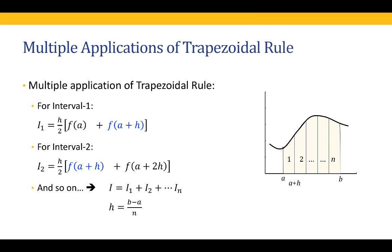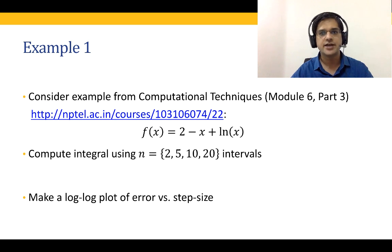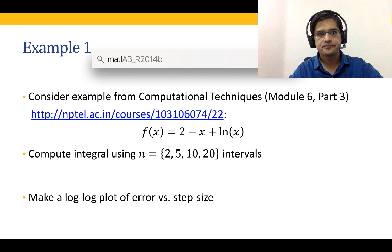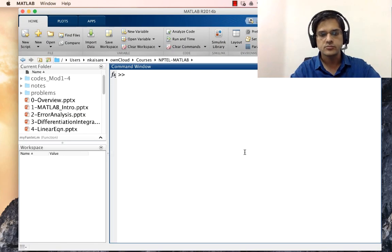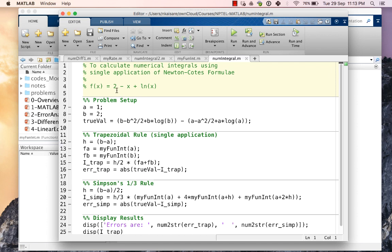What we will do now is go on to MATLAB and solve this using multiple applications of the trapezoidal rule. This is one of two methods I will show you in today's lecture. Let us consider the example that we solved in the previous lecture — that was to find the integral of 2 minus X plus ln X. We will open the file that we had used in the previous lecture, called num_integral, which calculated that integral using a single application.